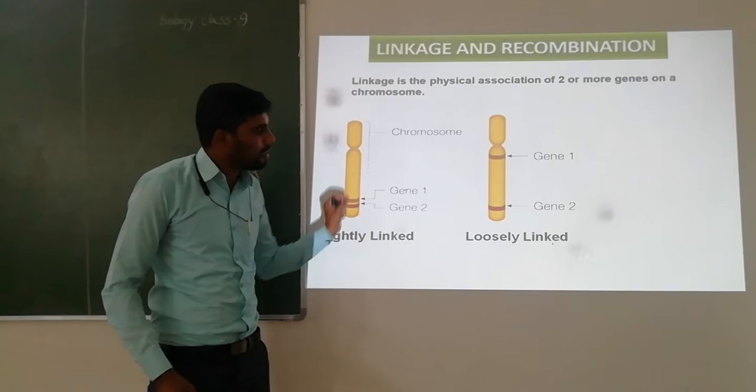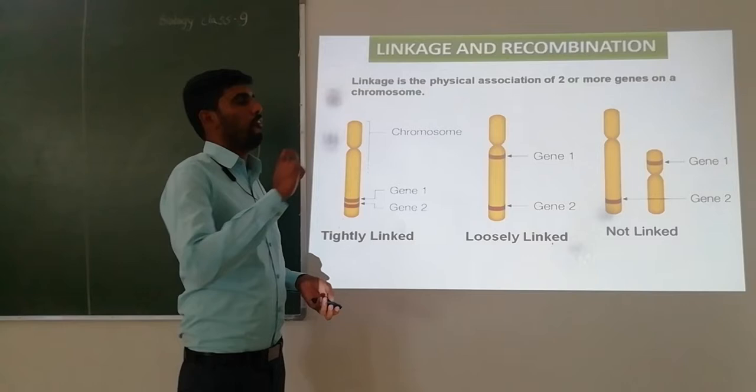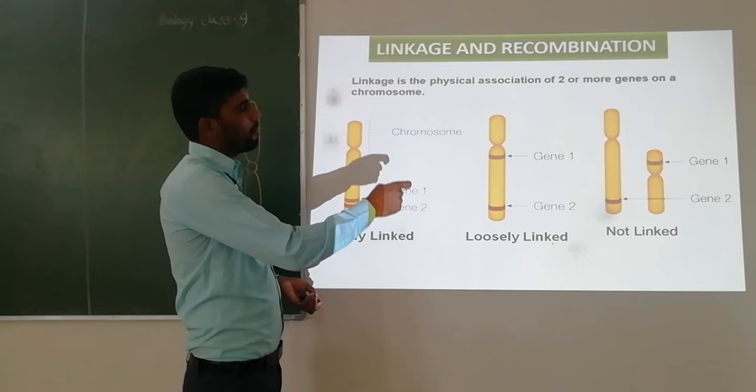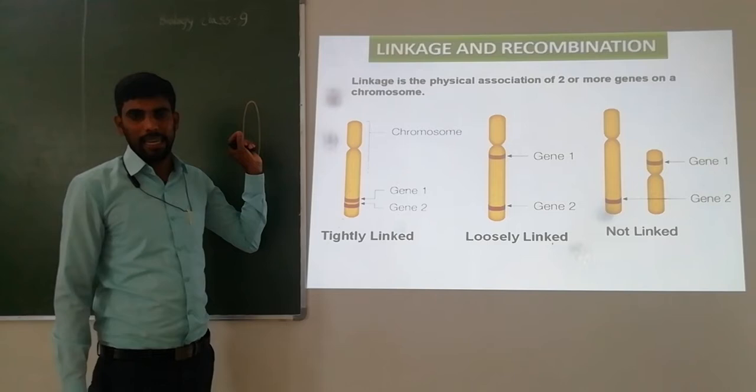When genes are present on different chromosomes, they are called not linked, because the genes are present on different chromosomes. The definition of linkage: physical association of two or more genes on a chromosome is called linkage.